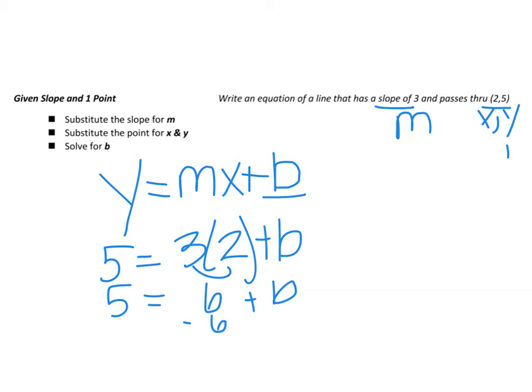So subtract the 6 on both sides and B is going to equal negative 1.